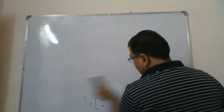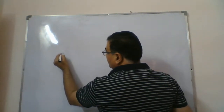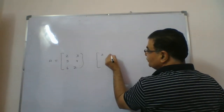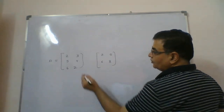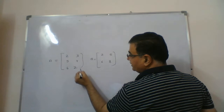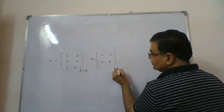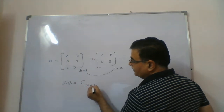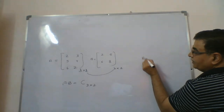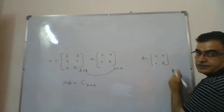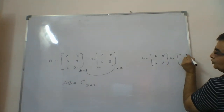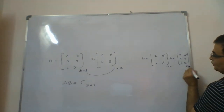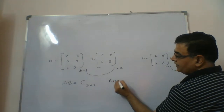One more example. Matrix A is [2, 3; 5, 4; 6, 2] — a 3×2 matrix — and matrix B is [2, 5; 6, 8] — a 2×2 matrix. Is AB possible? A is 3×2 and B is 2×2: columns of A equal rows of B, so yes, AB is possible. The result matrix C will have order 3×2. Now is BA possible? B is 2×2 and A is 3×2: columns of B is 2 but rows of A is 3 — not equal. So BA does not exist.